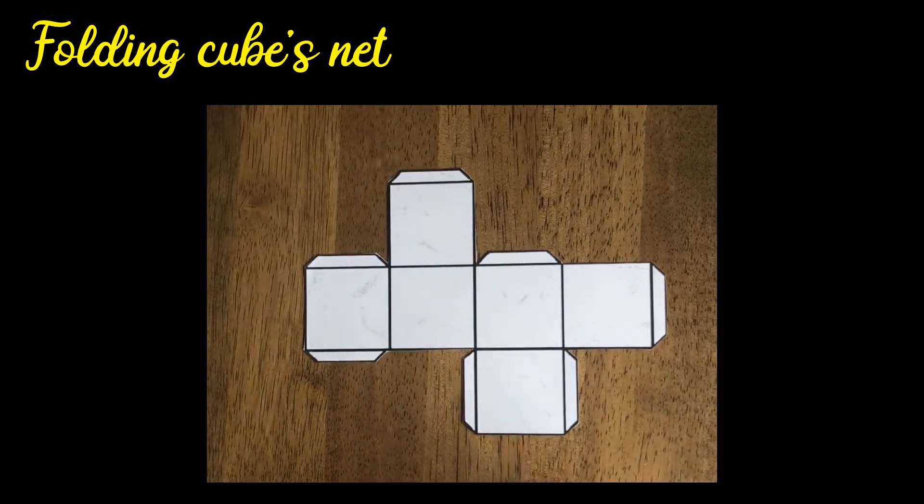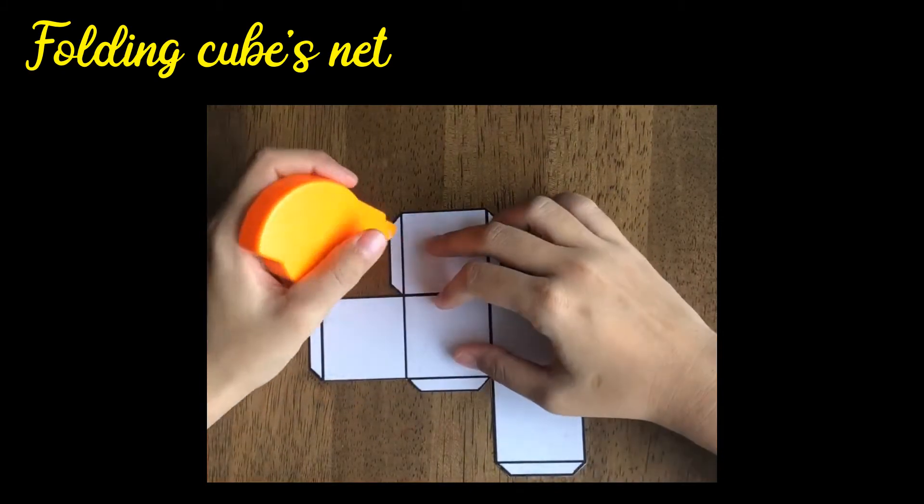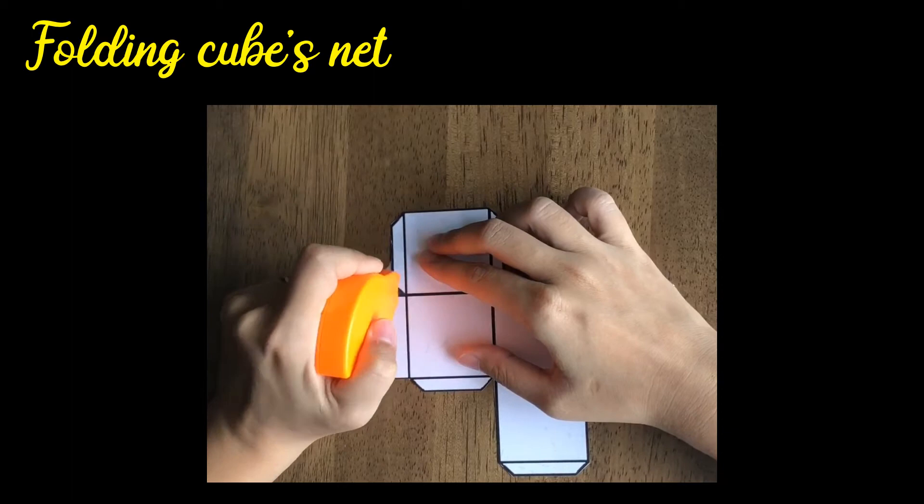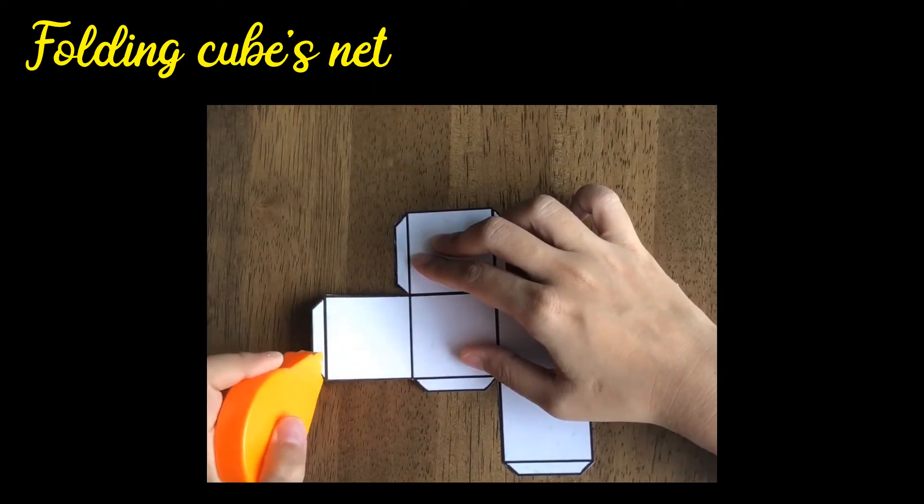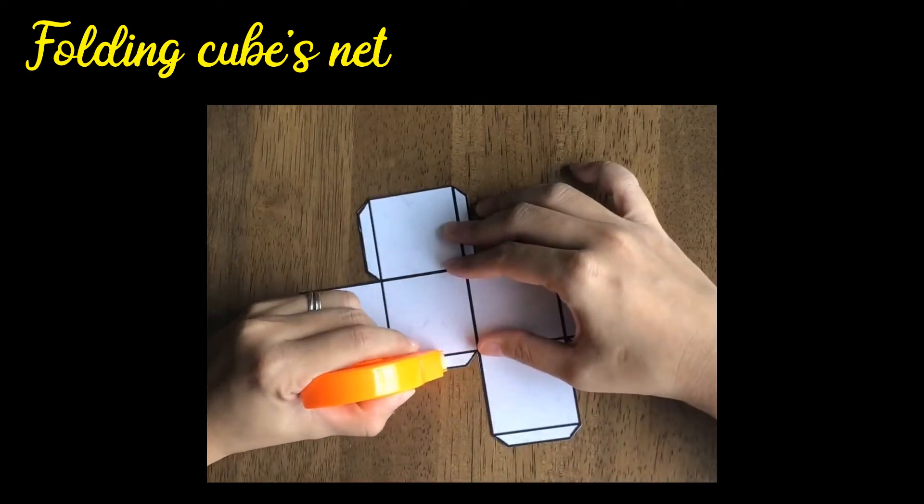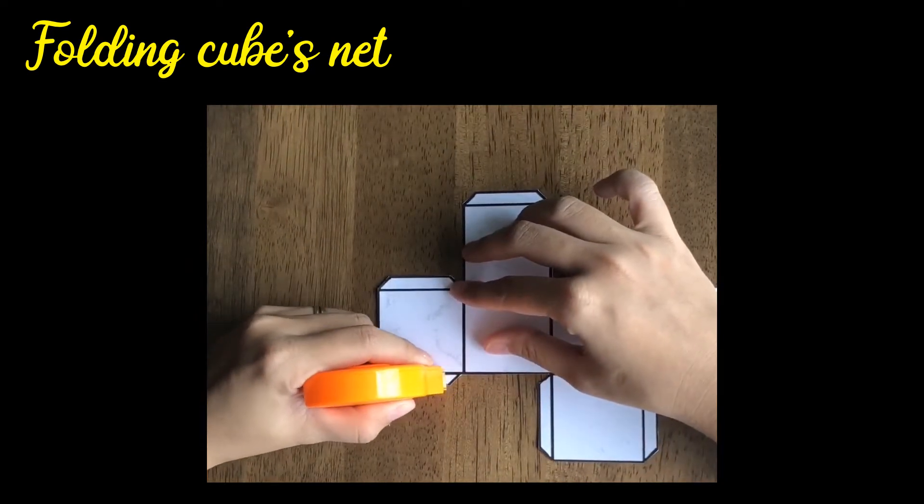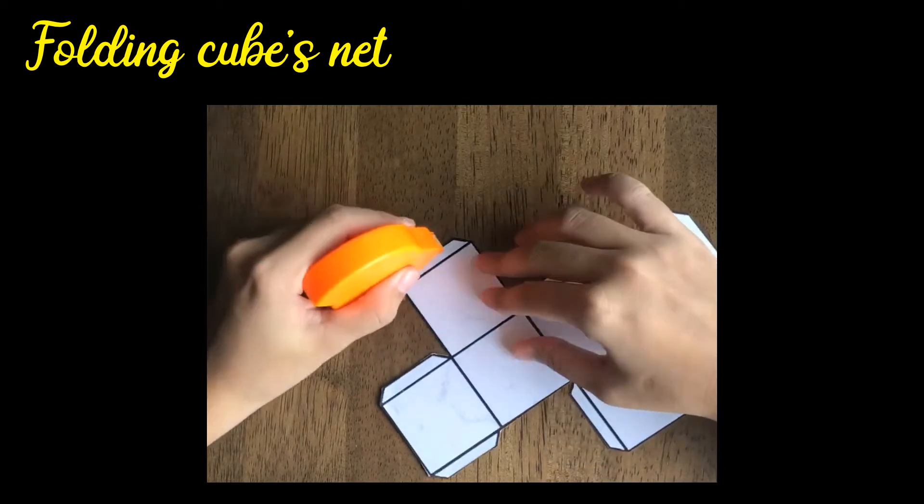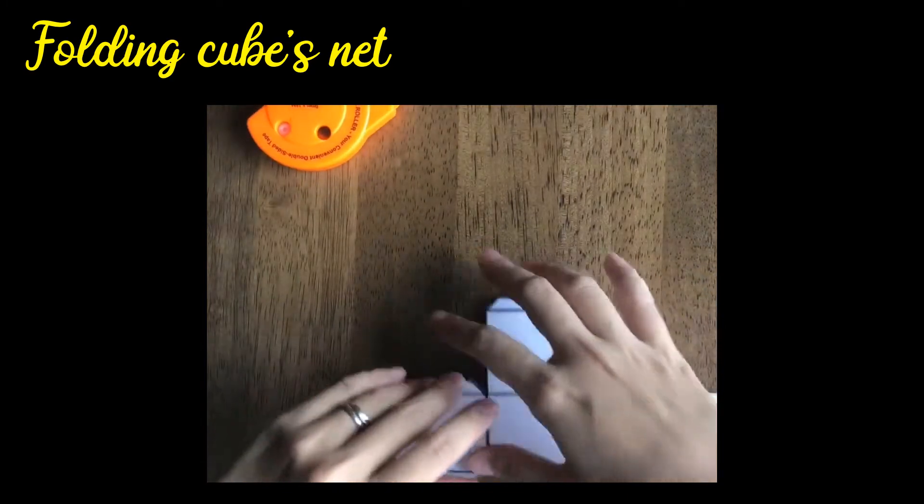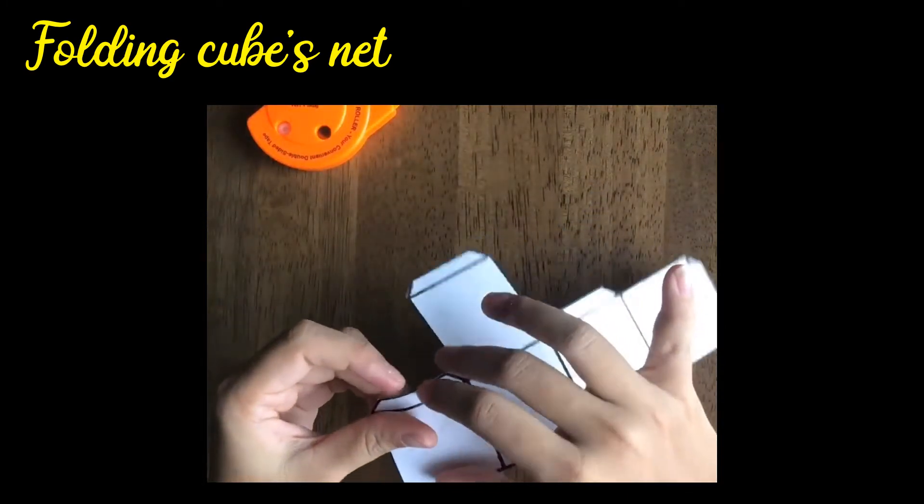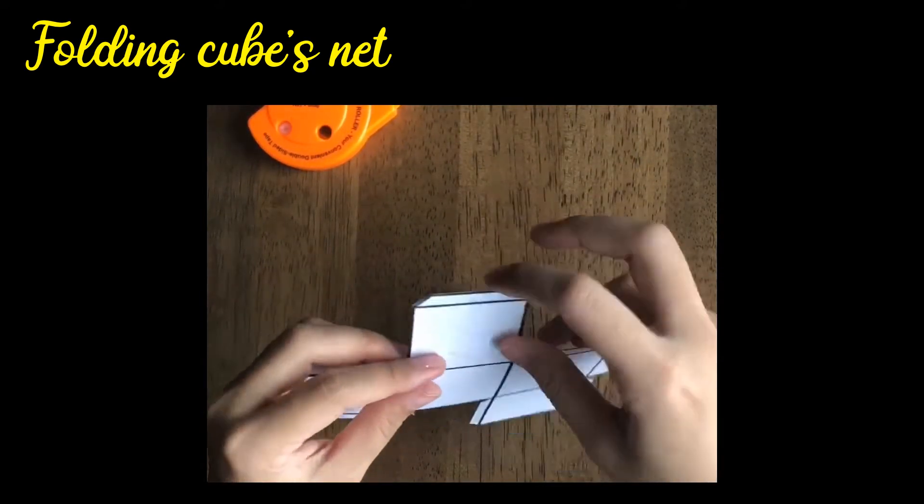This is your cube's net. Then at the side, you see a small side. You have to put some glue. I'm using a glue roller. So make sure all the sides, the small sides, you cover them with glue. Once you have covered all in glue, then you fold on each of the line.